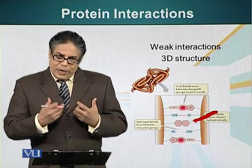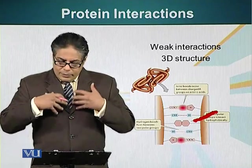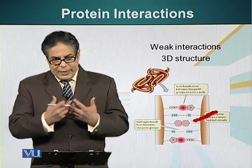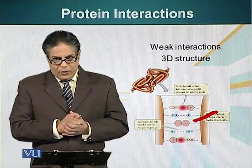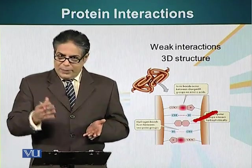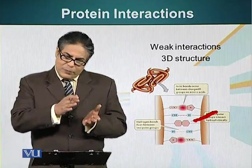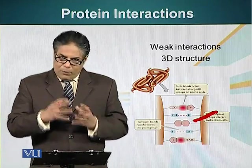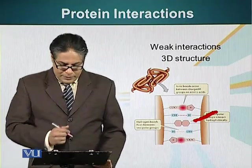All these interactions are very weak, but because their number is great, these weak interactions can stabilize the interaction of two proteins. Just as you are familiar with Velcro — the material used for example in tying up shoes — it is based on weak interactions, but many, many interactions that make it possible for two things to bind together. It is the same principle.